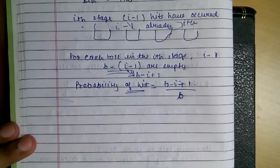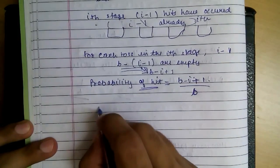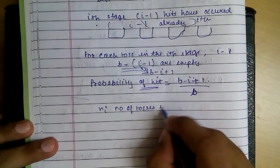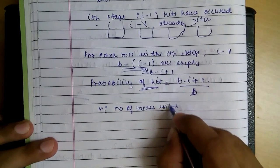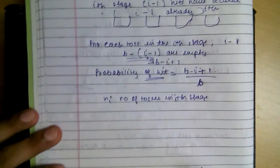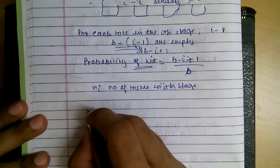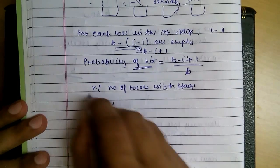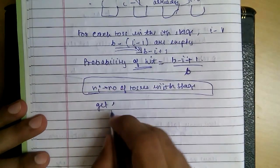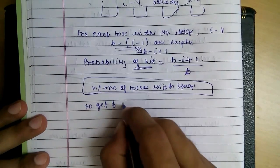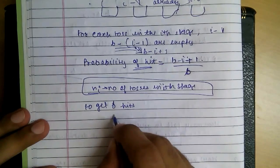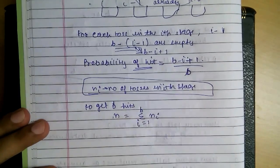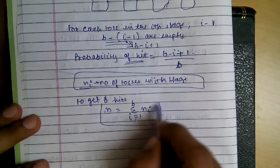So now let Ni be the number of tosses in the ith stage. So to get B hits, the number of tosses we do will be the sigma of 1 to B, that is n of i. This will be the total.